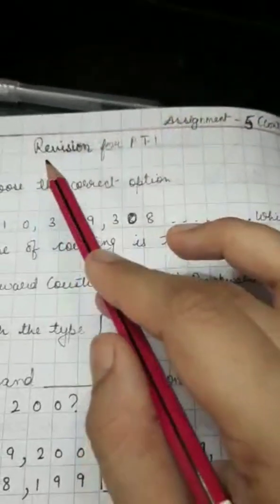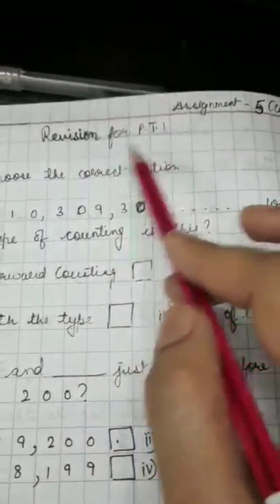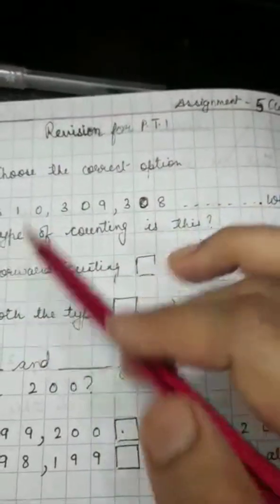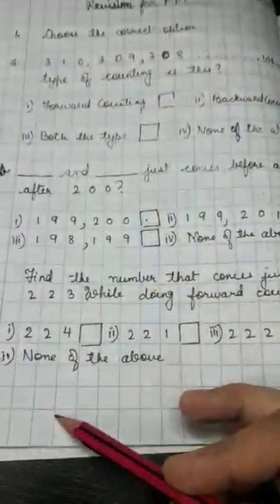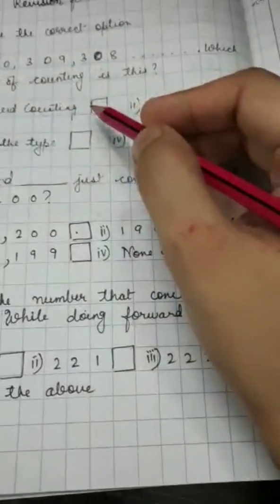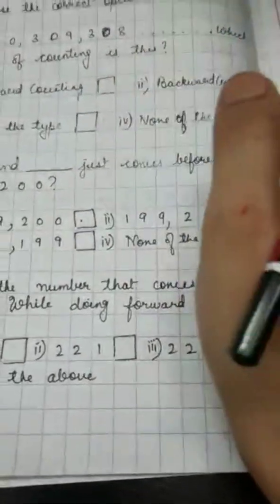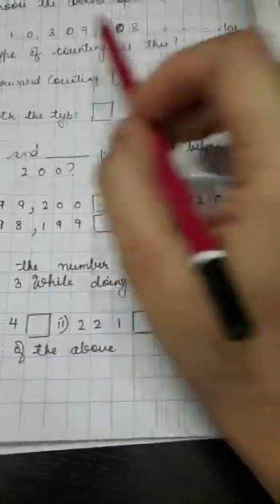Now, we have completed PT1 syllabus. So, I am giving one revision for PT1. I will read the questions. One thing is, children, you will write the whole question as ma'am has written. See, you will do it in the same way and whichever option is correct, you will put a tick over there, okay?